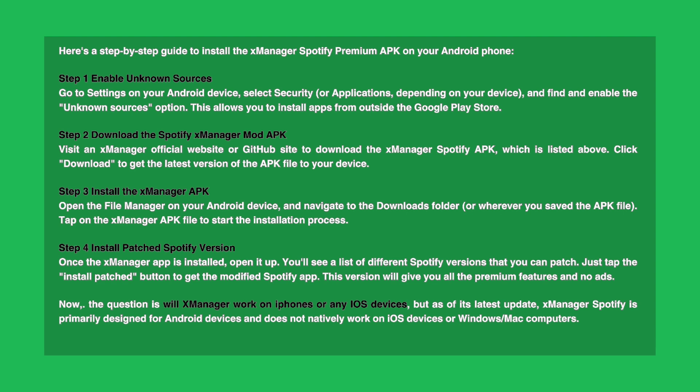Step 4, install the patched Spotify version. Once the X-Manager app is installed, open it up. You'll see a list of different Spotify versions that you can patch. Just tap the Install Patch button to get the modified Spotify app. This version will give you all the premium features and no ads.